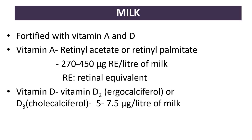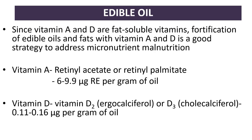For fortified milk: vitamin A (retinol acetate or retinol palmitate) at 270–450 mcg per liter, and vitamin D (ergocalciferol) at 5–7.5 mcg per liter. For edible oil, since vitamins A and D are fat-soluble, fortification of edible oils and fats with these vitamins is a good strategy to address micronutrient malnutrition.